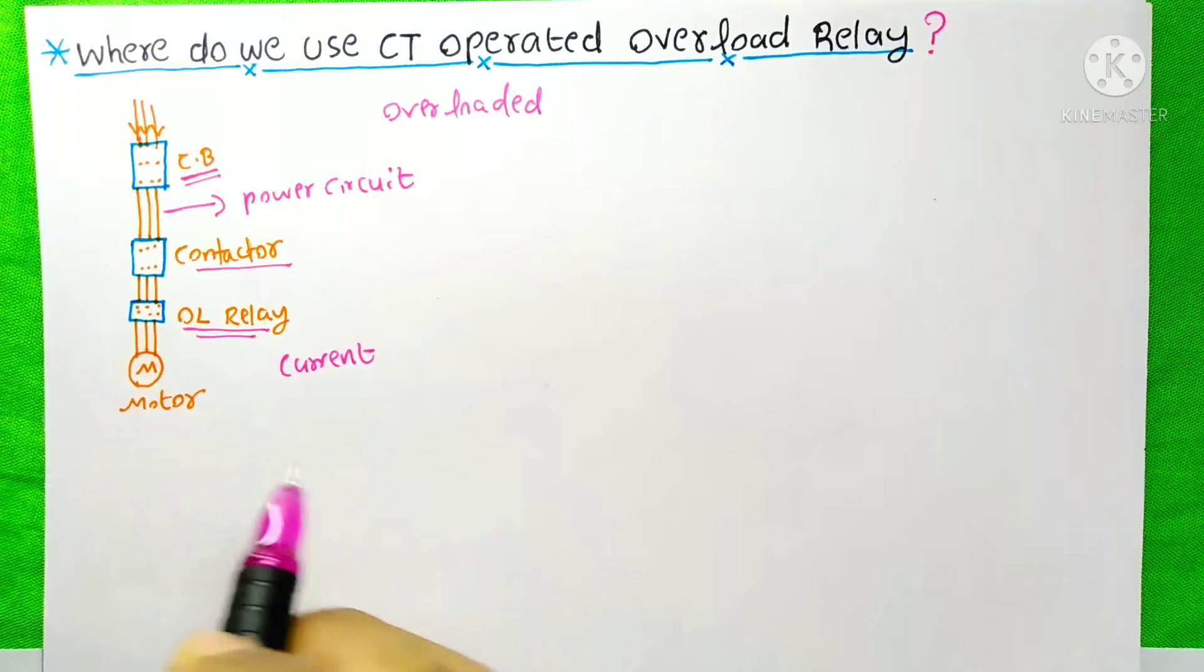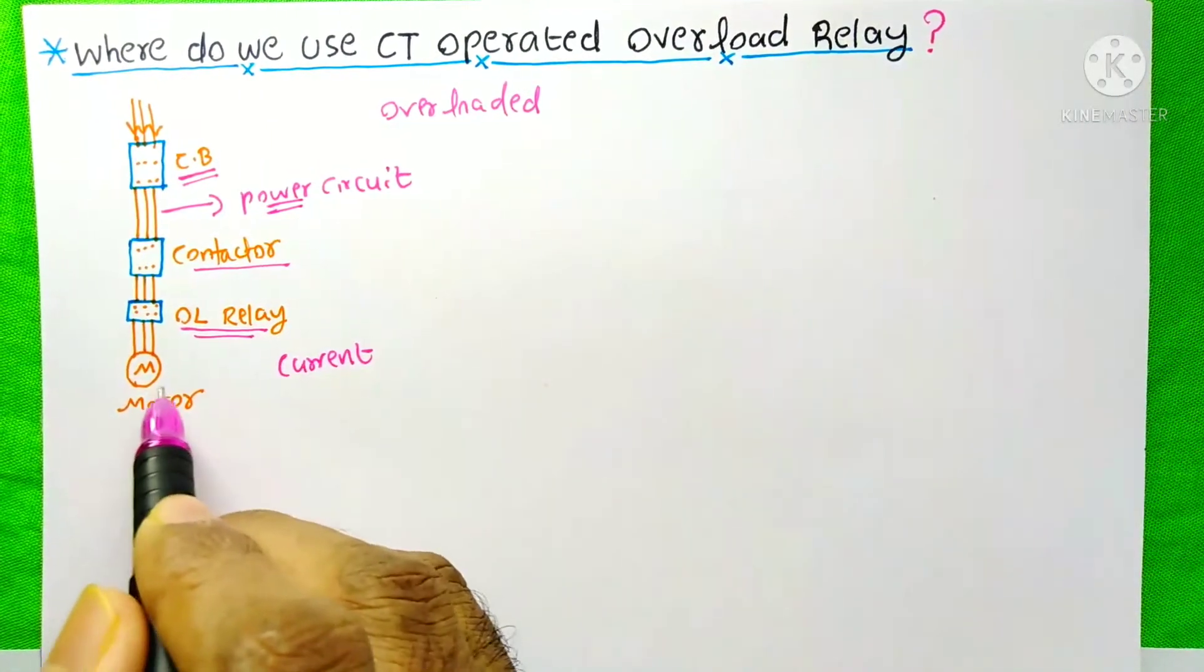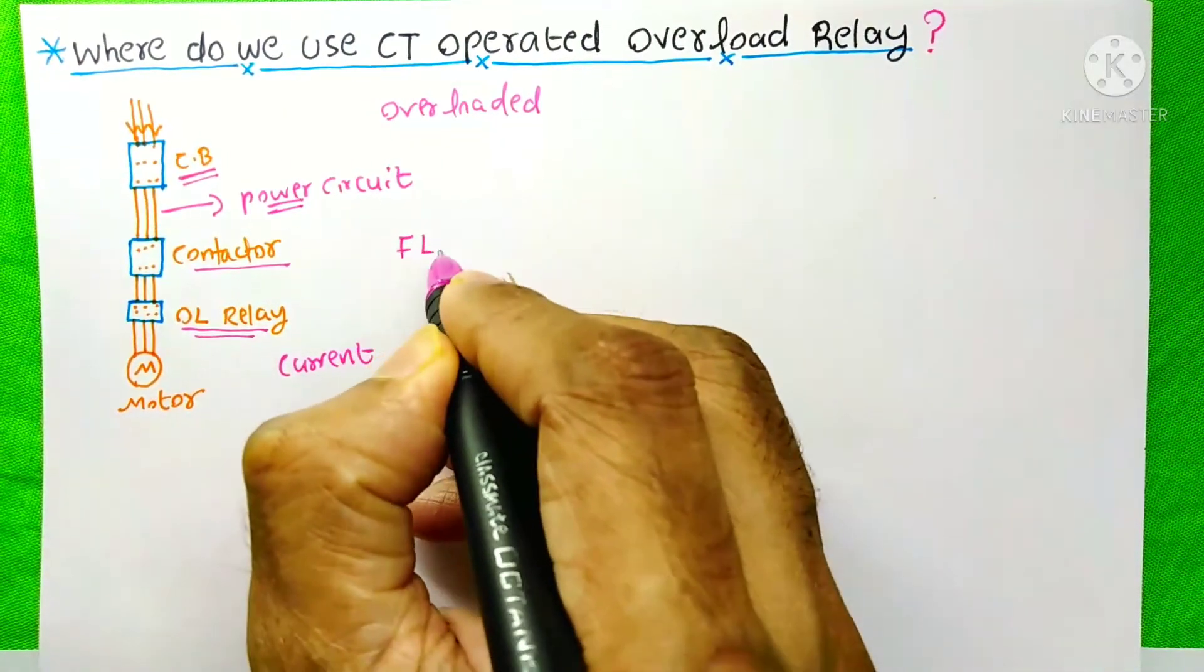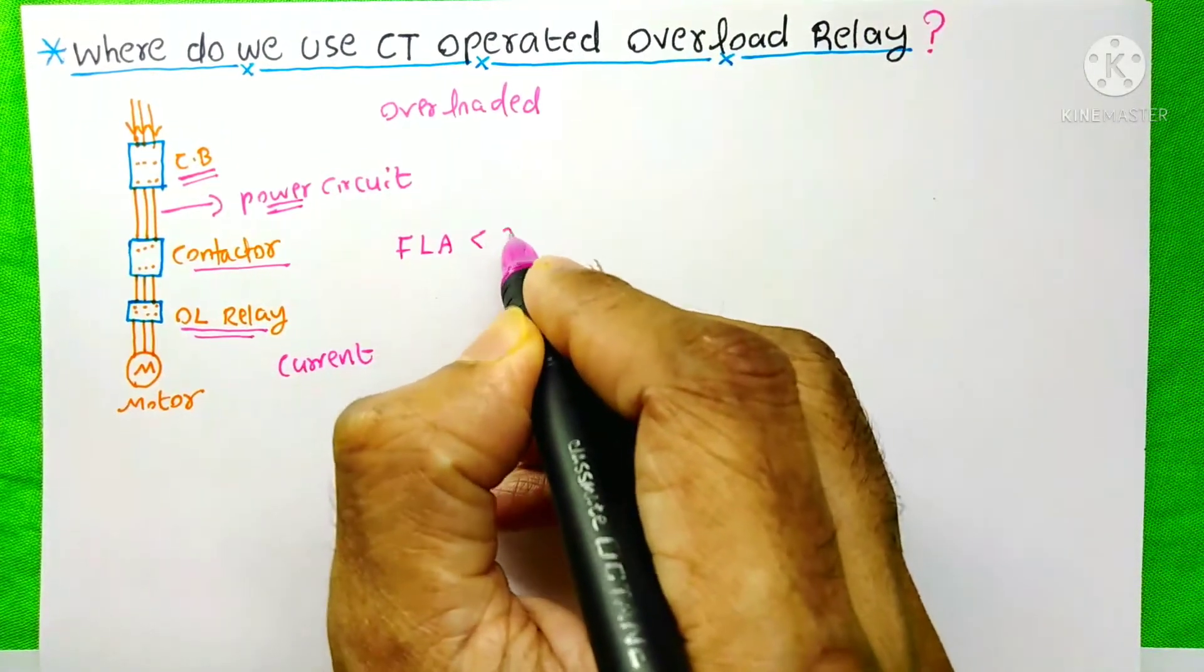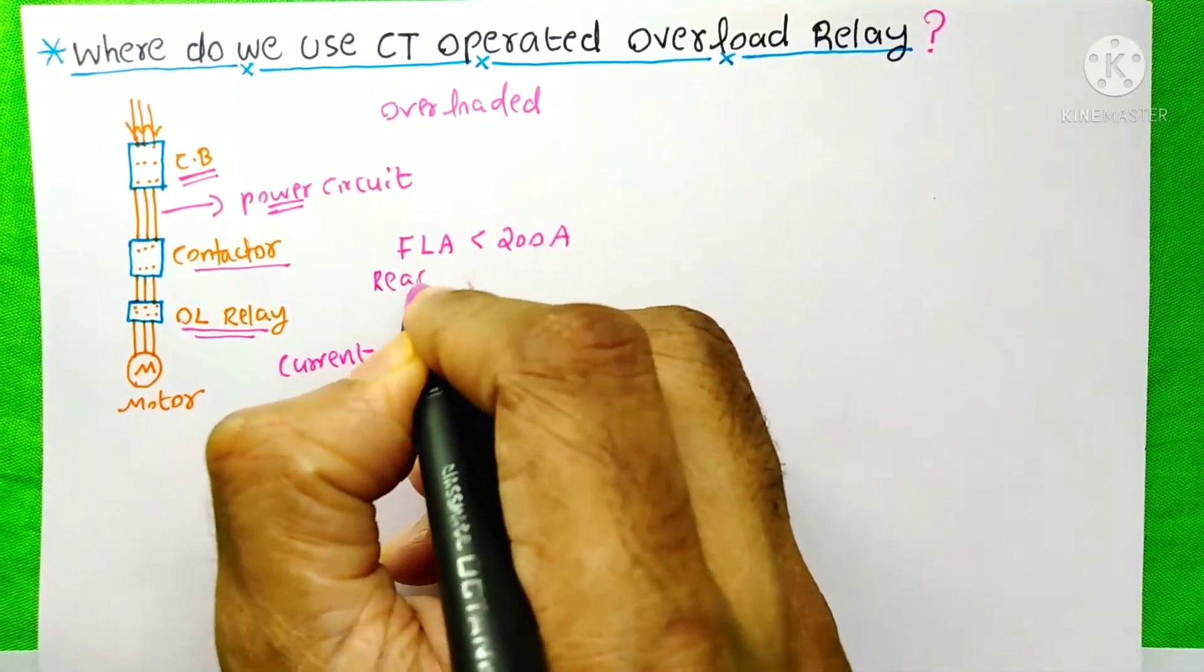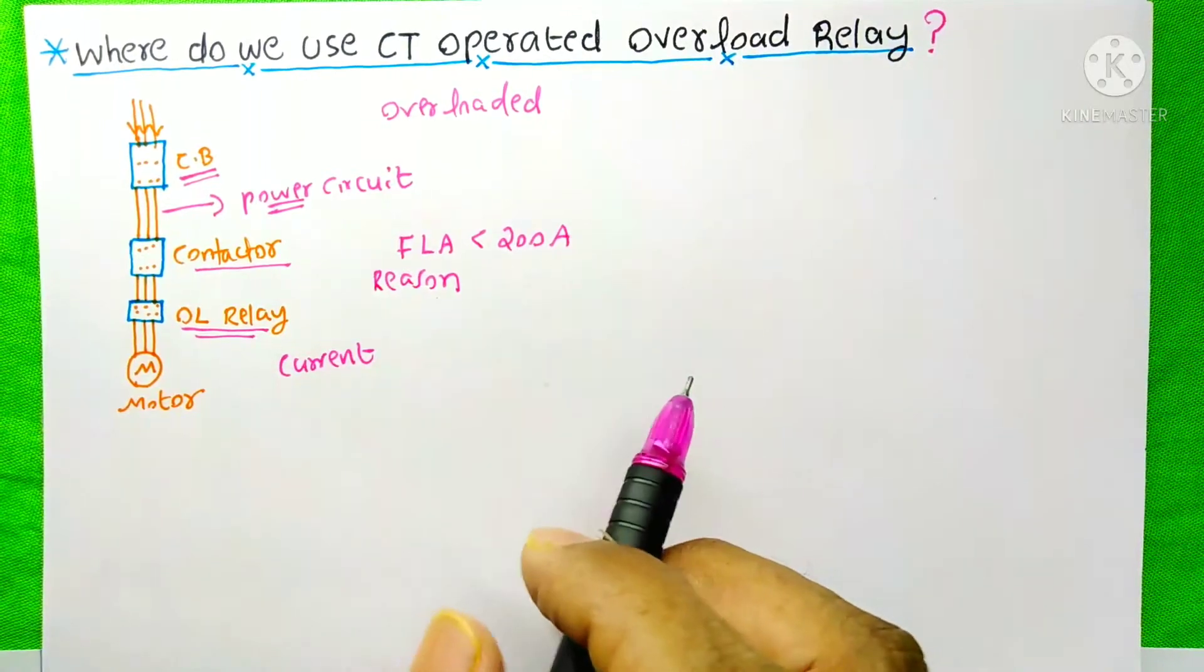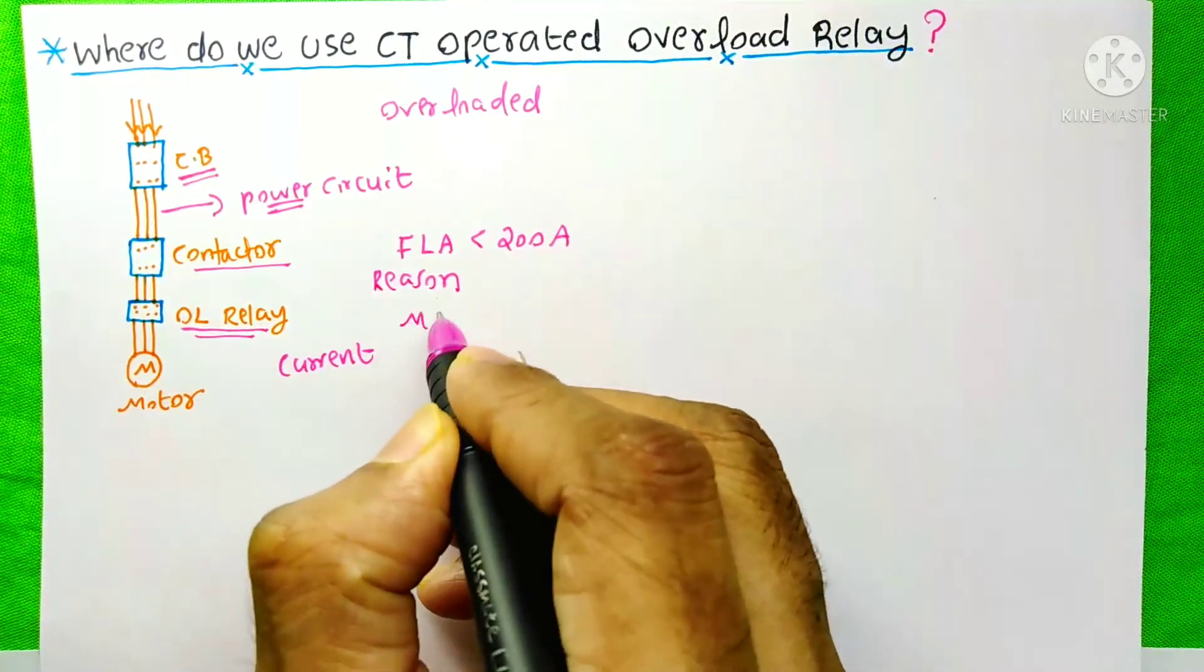Generally, we use the overload relay in the power circuit if the full load ampere of the motor is less than 200 ampere. The main reason behind this is overload relay less than 200 ampere is only available in the market.